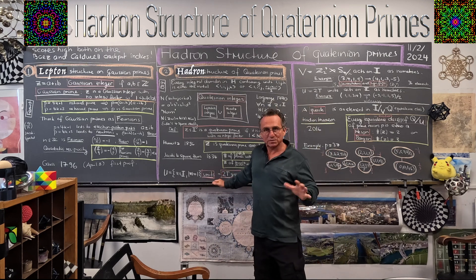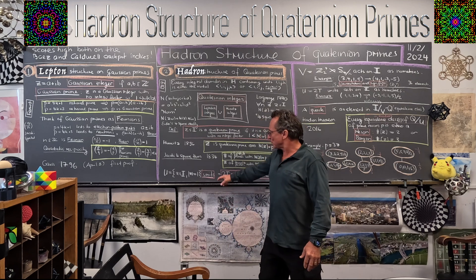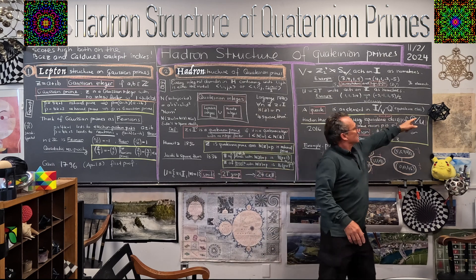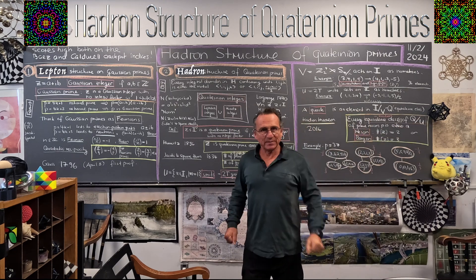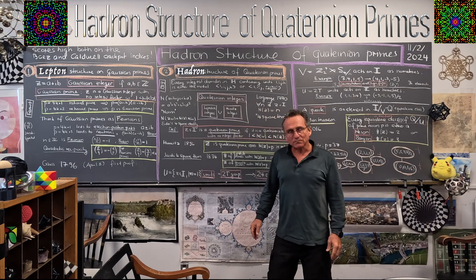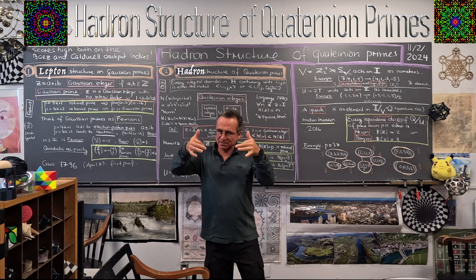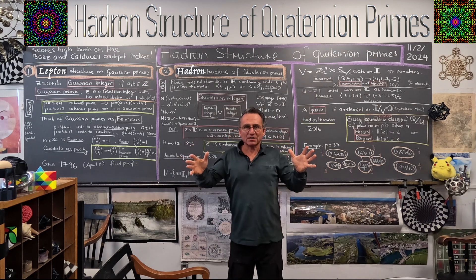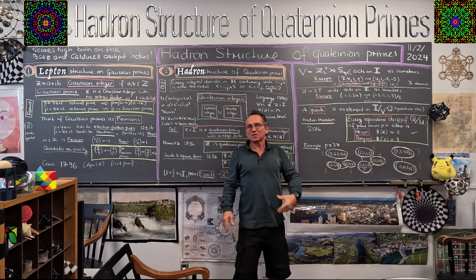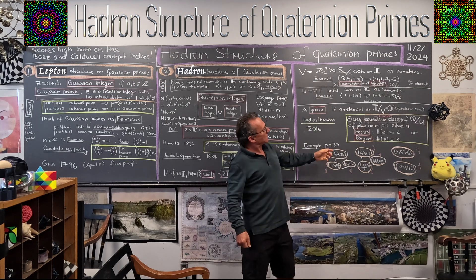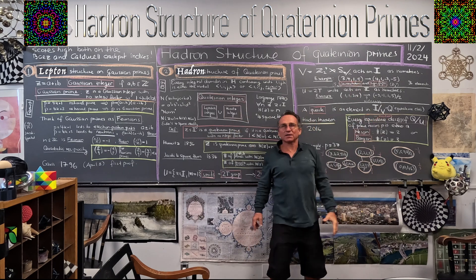First of all, you have groups acting on the integers. There's the group of units — the 24 units — which form the binary tetrahedral group, usually called 2T. These are represented by the 24-cell, with 24 vertices, each vertex being an element of this unit group. But then there is another group acting on the integers, given by permutations and sign flips. Every integer can be permuted so it is ordered and all entries made positive. You have representatives in these equivalence classes — and I like to think about the integers modulo this group as quarks.